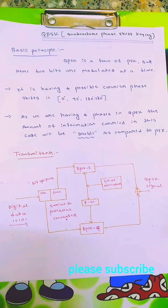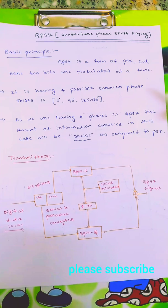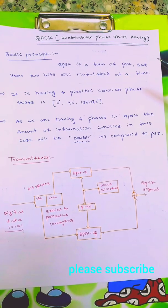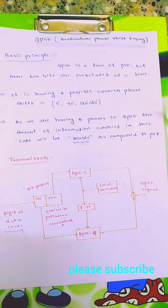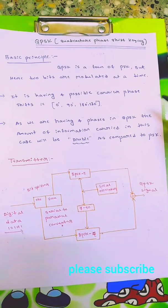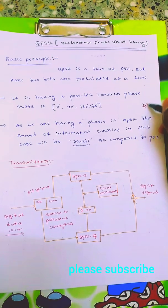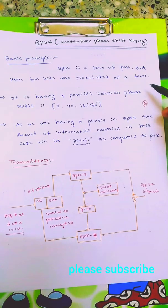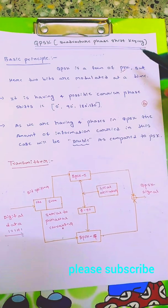First, the basic principle: QPSK is a form of PSK but here two bits are modulated at a time. QPSK means Quadrature, quad basically means four. In this we have four phases for the carrier, but in case of phase shift keying we have only two phases.